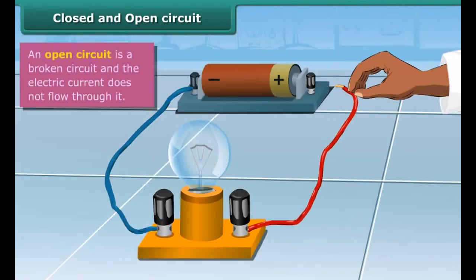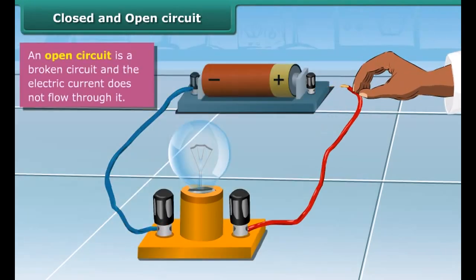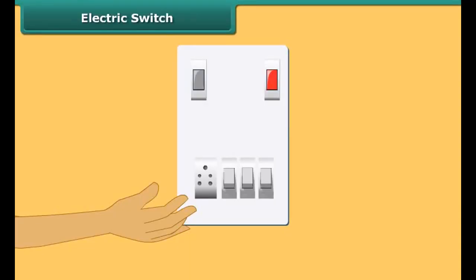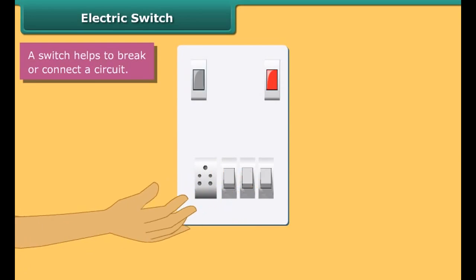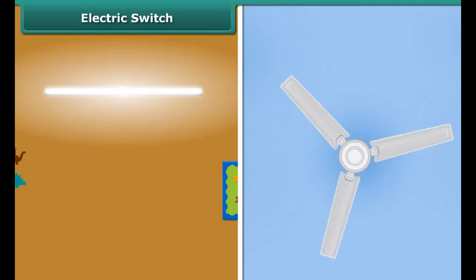Disconnect one of the wires. You will find that the path is broken now. Also, the bulb doesn't light up since electricity can't flow through this circuit. A broken path is known as an open circuit.